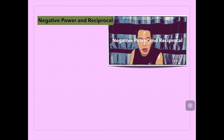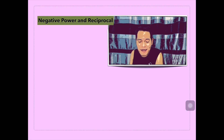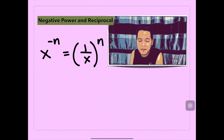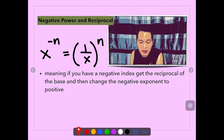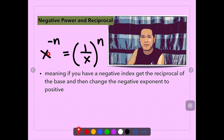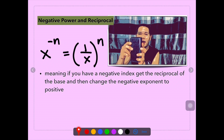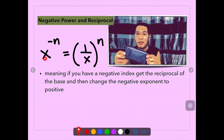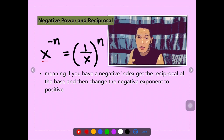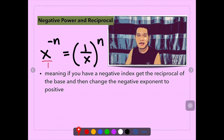Up next is about negative power and reciprocal. What do we mean by this? We have the representation: x to the power of negative n equals 1 over x to the power of n. Meaning, if you have a negative index or negative power, you simply get the reciprocal of the base and change the negative exponent to positive. The reciprocal means changing the numerator and denominator — so x, which is x over 1, becomes 1 over x. As we get the reciprocal of the base, we change the sign from negative to positive.